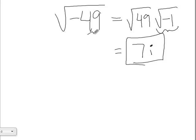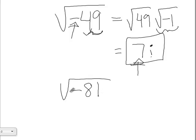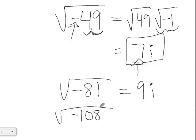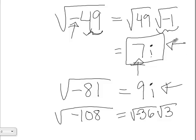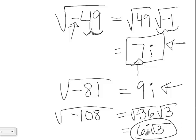Basically, you just take the square root of the positive part and when you see the negative, pull an i out and add it to your solution. So the square root of negative 81: the negative makes an i, and the square root of 81 is 9, so it's 9i. What about the square root of negative 108? Since 108 is not a perfect square, we look for the largest perfect square that goes into 108, which is 36. Separate it into the square root of negative 36 times the square root of 3. The square root of negative 36 is 6i, and we can't simplify the square root of 3, so the answer is 6i√3.